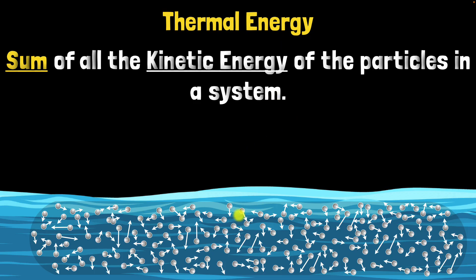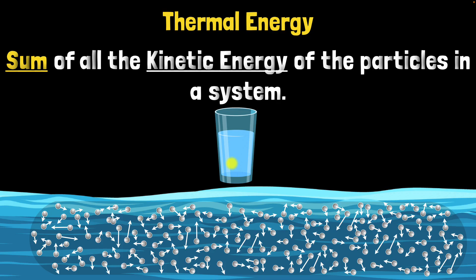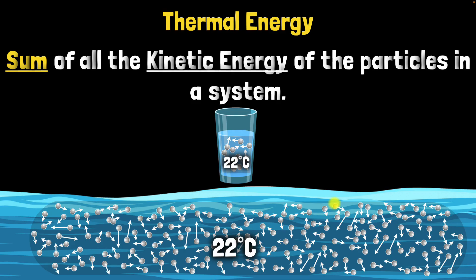Here's a quick question: if something has a lot of thermal energy, does it mean it is hotter? If you take a glass of ocean water, it would be at the same temperature as the ocean — say, 22 degrees Celsius — so it won't be any hotter or colder. But it has much fewer molecules, so if you add up the kinetic energies it'll be much smaller than what you'd get for the ocean. In other words, the glass has much smaller thermal energy compared to the ocean, but they have the same temperature. So thermal energy is not the same thing as temperature.